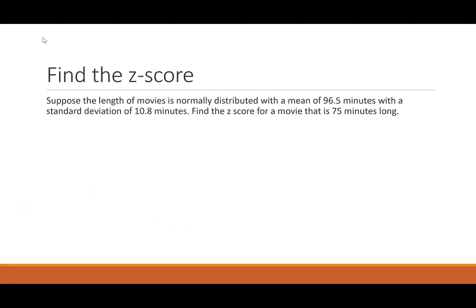So let's try that. Suppose the length of movies is normally distributed with a mean of 96.5 and a standard deviation of 10.8. Let's find the z-score for a movie that is 75 minutes long. So we're going to start by taking our data point 75. We are going to subtract the mean at 96.5 and then we divide by the standard deviation of 10.8. Throw that in your calculator and you get negative 1.99.